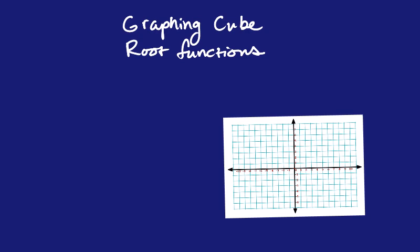Alright, this video is going to be on graphing cube root functions. Obviously a cube root has a different index than a square root. A cube root looks like this. Remember we have the radical, but then the index has a 3 right there. So we're going to talk about what kind of functions you can get, or what do the functions look like when you're graphing a cube root function.